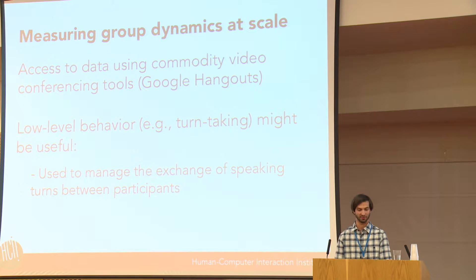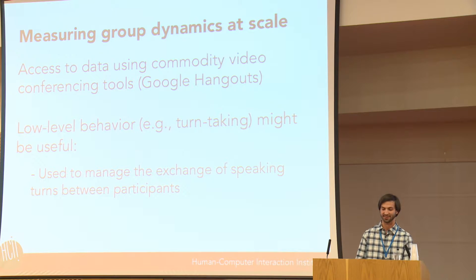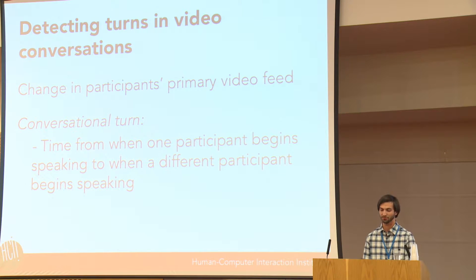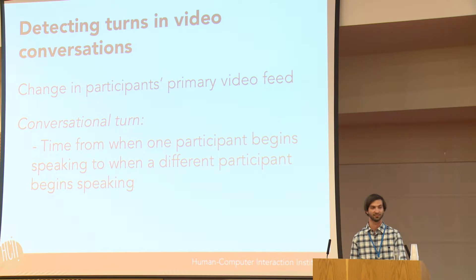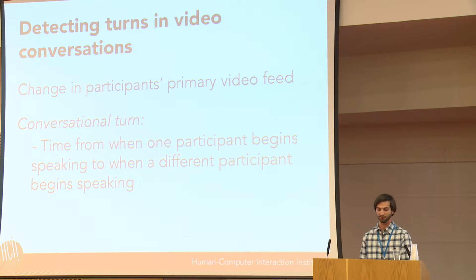Turn-taking is used to manage the exchange of speaking turns between participants by using signals that dictate when a turn has ended or will continue. To detect turns in video conversations, we can use the fact that participants' primary video feed changes when someone new begins speaking. We can use this to determine the start of a conversational turn, and we log when that primary video feed changes as reported by the Google Hangouts API.